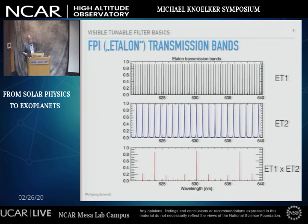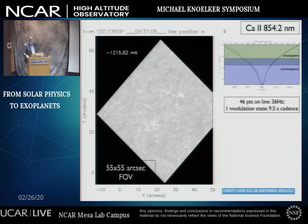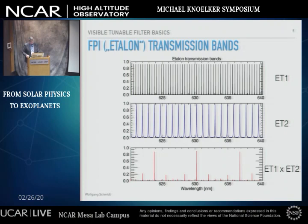Each of these Fabry-Perots produces what we call a channel spectrum of transmission peaks — many, many transmission peaks. If you employ a different Fabry-Perot, you have fewer transmission peaks with a different separation, and they are not quite as narrow. If you combine both in the optical beam, you get very few transmission peaks, and this is what we want. The only additional thing you need is a pre-filter to suppress all but one of the large red transmission peaks.